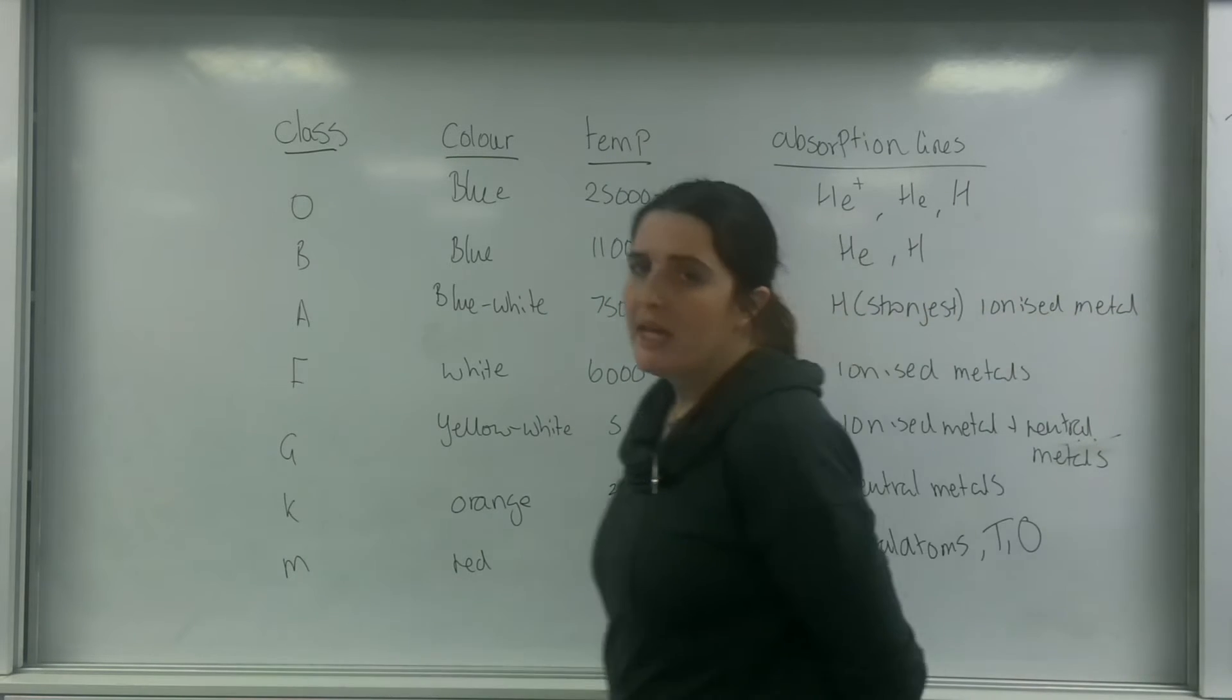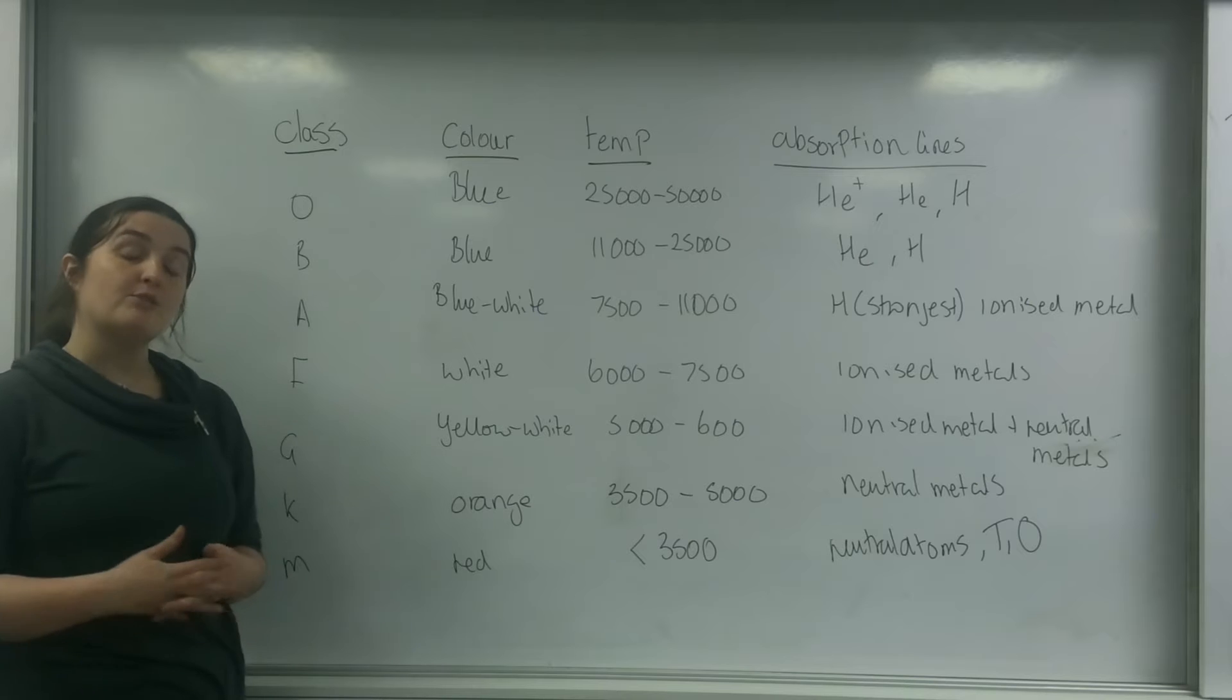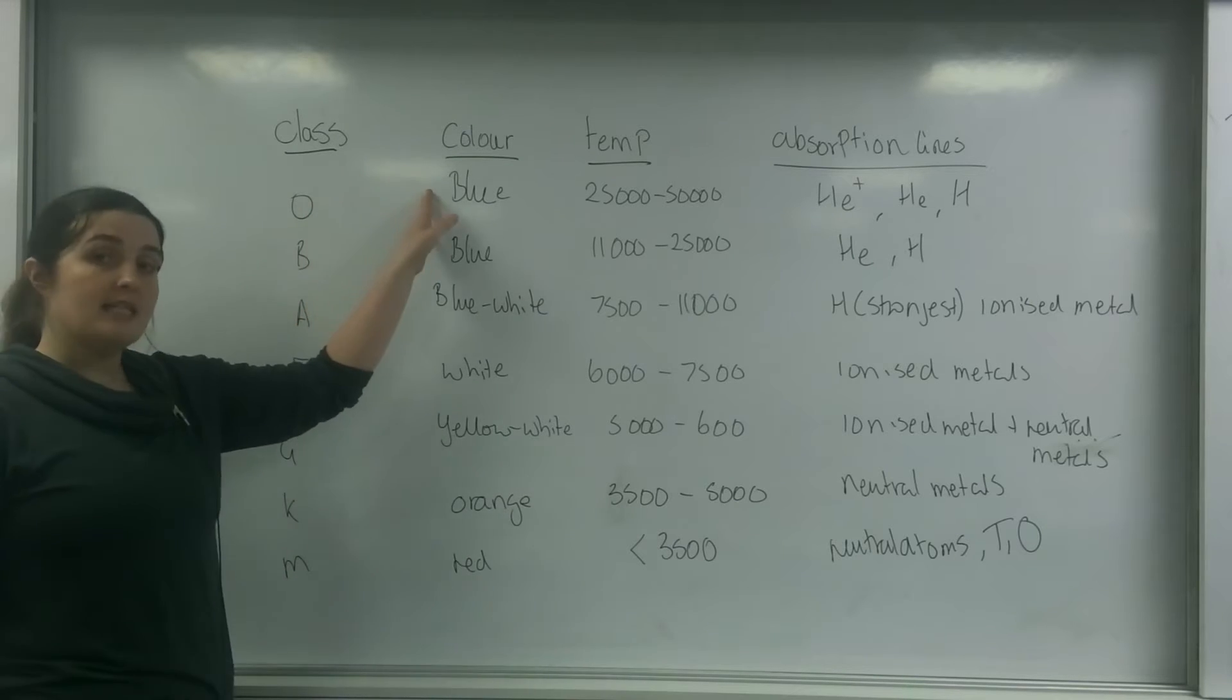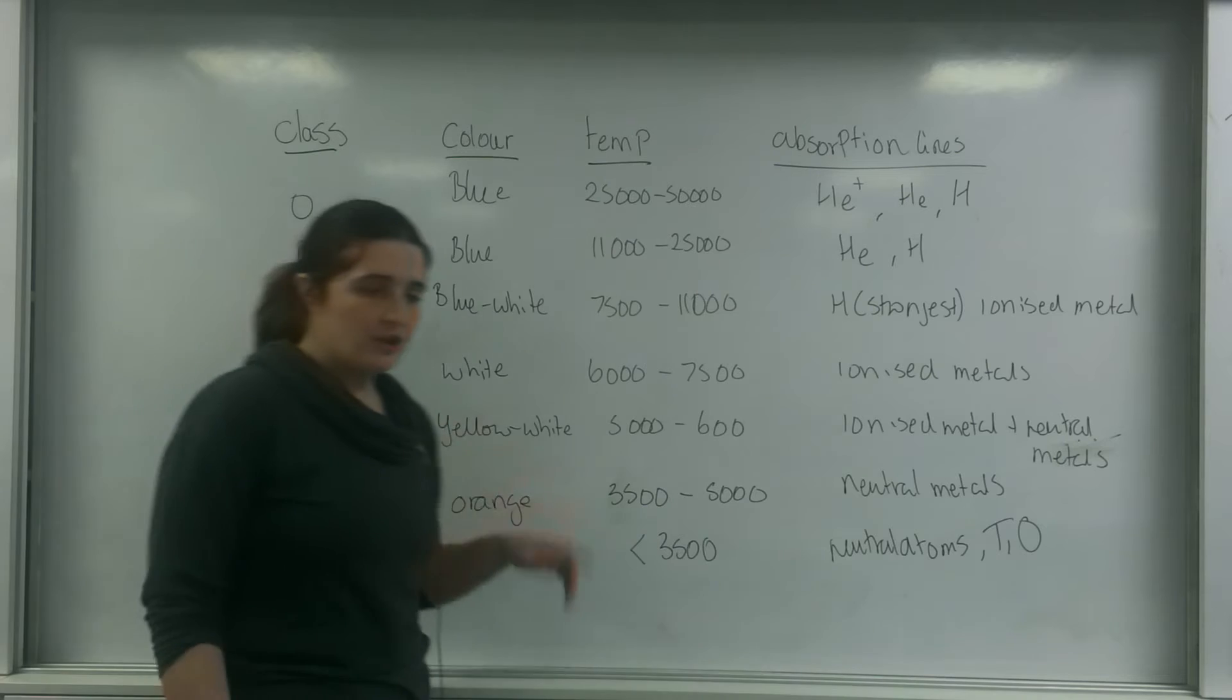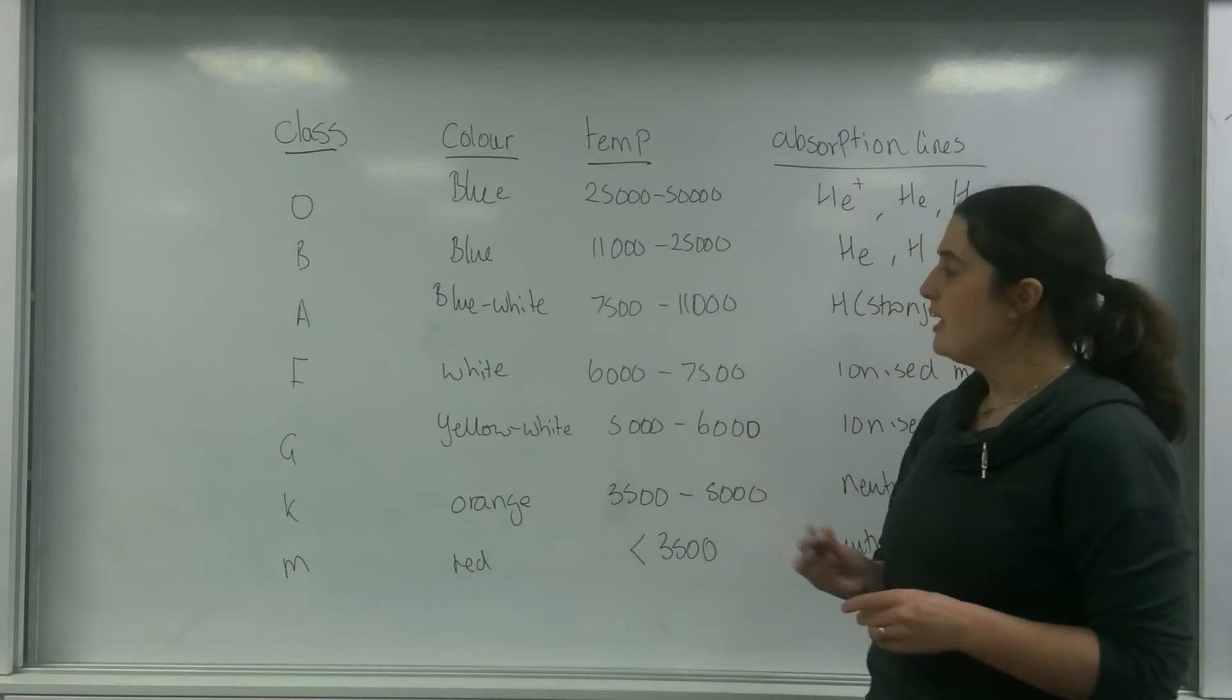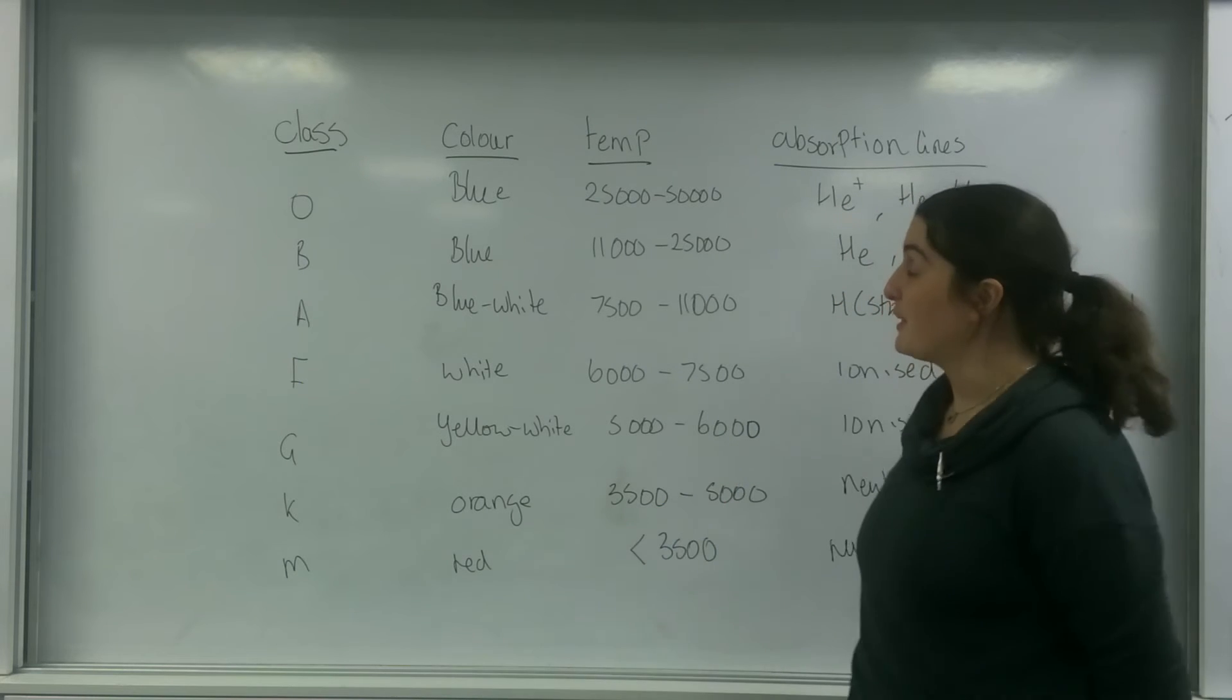The information found on this table is the star class, the color that it relates to, and this relates to Wien's law. The O class stars tend to be blue, B class blue-white, A white, F white, G yellow, K orange, and M red. Our star tends to be around the G or K class. It's about 5800 Kelvin, so it would find itself within a G class star. It's a yellow-white color, which is approximately the color of our sun.